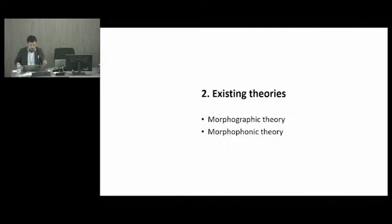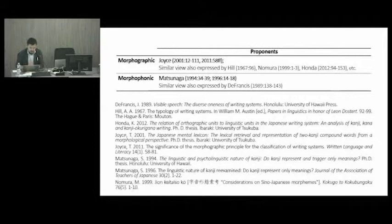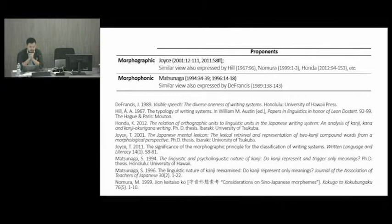The morphographic theory has been described in the most systematic way by Joyce in a series of his studies, and there have been other studies expressing similar views, but in this presentation I'm going to focus on Joyce's version of this theory. The other one, morphophonic theory, was presented by Matsunaga in her studies.